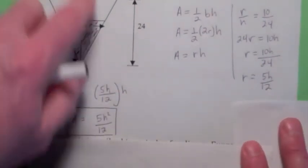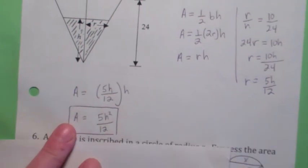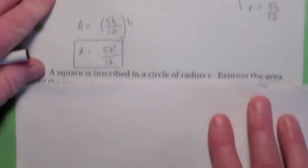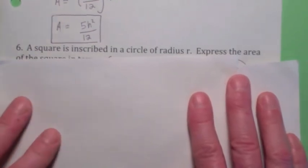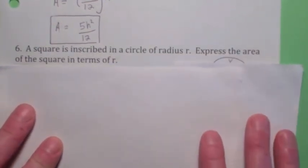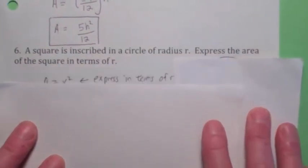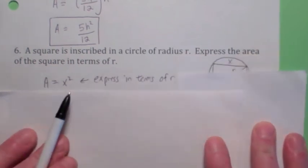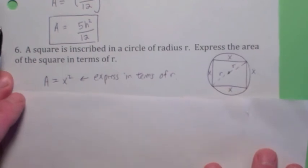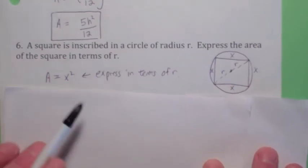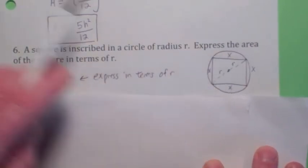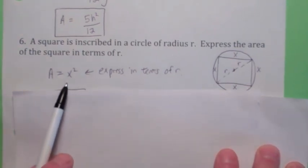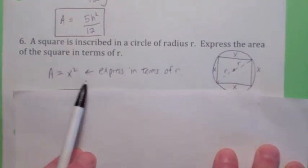And for the last one, it says a square is inscribed in a circle of radius r. Remember, it's a square now. So you want to express the area of the square in terms of r. Well, the area of a square, if you draw this picture here, the area of a square is... If this is the length of the side of the square x, then the area would be x squared. You want to express this in terms of r. So what's the relationship between x and r?